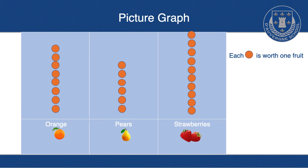Where it says on the right hand side that each circle is worth one fruit—that's really important. On some data sets, each counter could be worth 10 fruits, so we'd be counting in tens. Instead of eight oranges, if each counter were worth 10 fruits, there would be 80 oranges in the basket. It's really important to check the key before you do anything else.